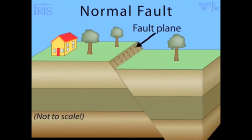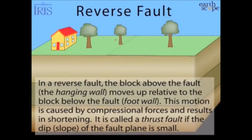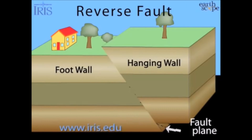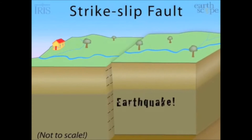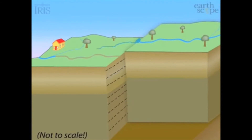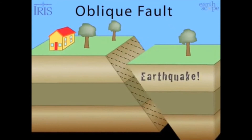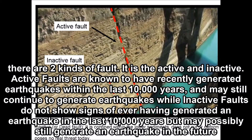A normal dip-slip fault is when the hanging wall moves down relative to the footwall; it is also known as an extensional fault. There are two kinds of faults: active and inactive. Active faults are known to have recently generated earthquakes within the last 10,000 years but may possibly still generate an earthquake in the future.